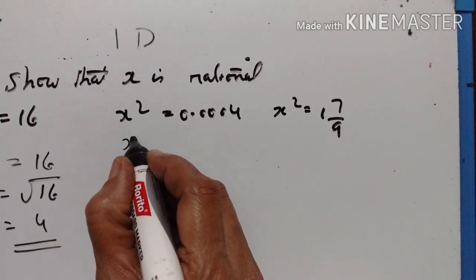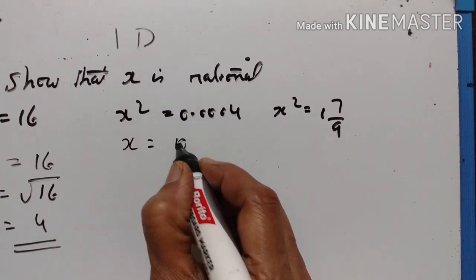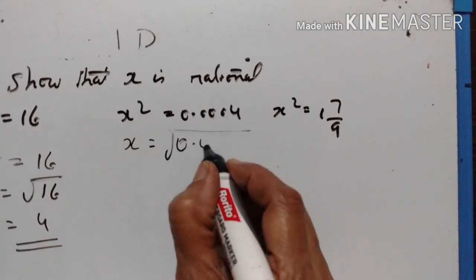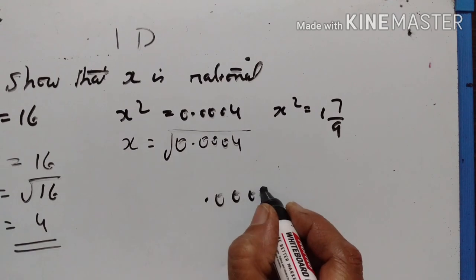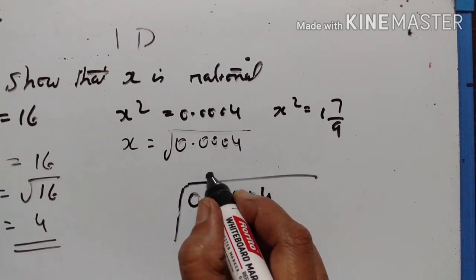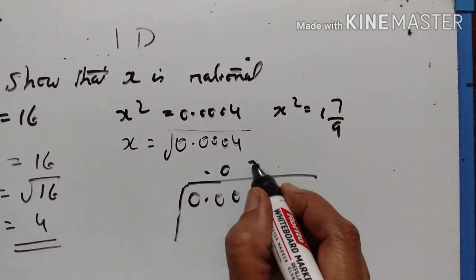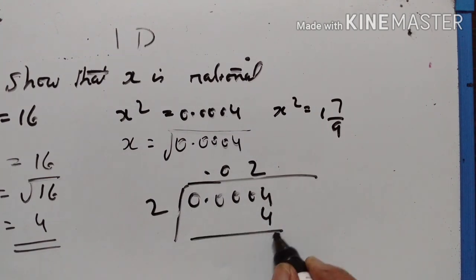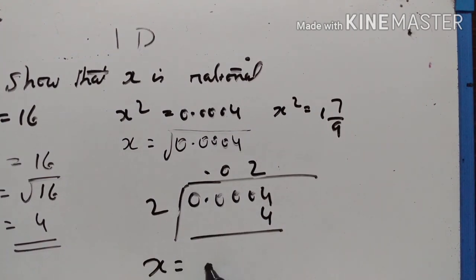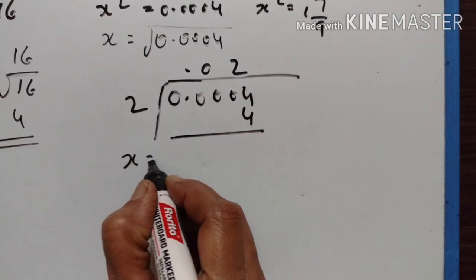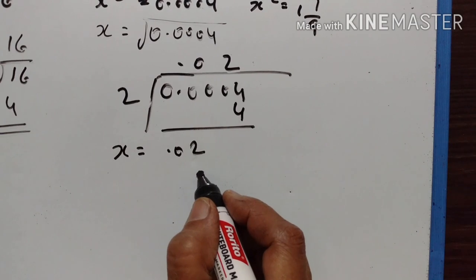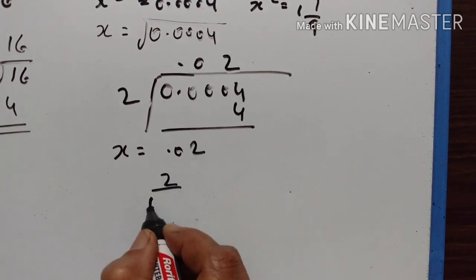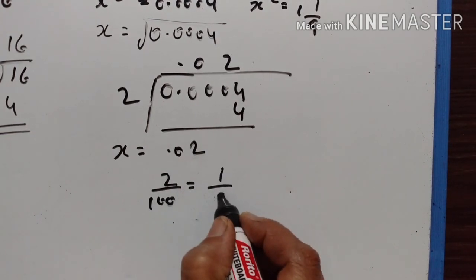Next, x squared equals 0.0004. Therefore x equals the square root of 0.0004, which equals 0.02. And 0.02 is equal to 2 upon 100, which equals 1 upon 50. So x is a rational number.